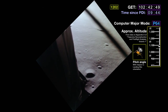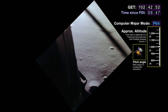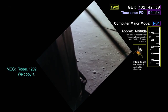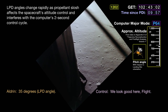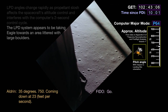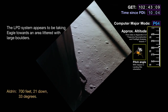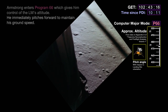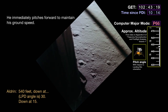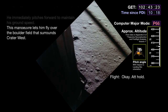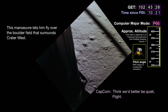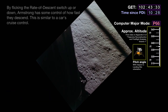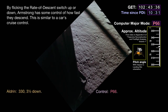Altitude 1,400 feet, still looking very good. 12-02 alarm again — Houston copies. Control, Telcom, and Guidance all confirm go. P-66 now active — Armstrong in the control loop. Altitude 700 feet, 21 feet per second down, 33 degrees. 540 feet, down at 30, then correcting to 15. Flight controllers asked to quiet down — only fuel callouts from here. 400 feet, down at 9, speed forward. 160 feet, descending.